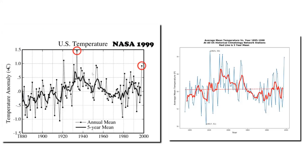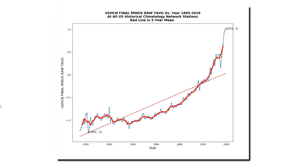This side-by-side image shows the NASA 1999 temperatures on the left and the version which I generated using my software on the right. The graph on the right is generated using the current raw unadjusted NOAA temperature data. The similarity between these two graphs shows that the NASA 1999 version of U.S. temperatures was a pretty accurate representation of the raw unadjusted temperature data. The NASA data is based almost entirely on the NOAA data set, and it's pretty clear that NOAA is altering the data.